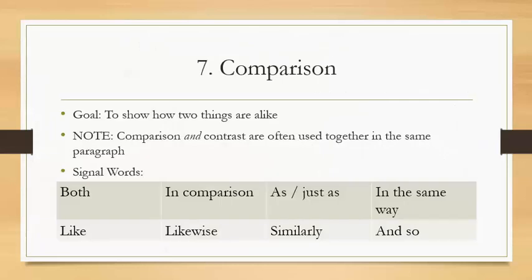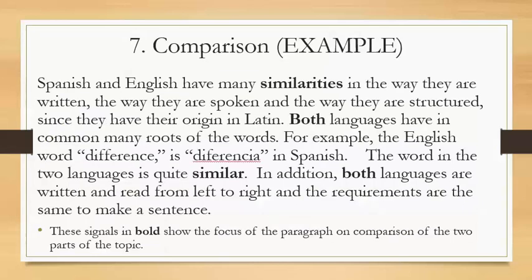Number seven: comparison. The goal is to show how two things are alike or similar — remember, synonyms are a comparison showing similarity. Comparison and contrast are often used together in the same paragraph, showing some similarities and some differences. Signal words for comparison are: both, in comparison, as or just as, in the same way, like, likewise, similarly, and so. The example paragraph here is all comparison — showing all similarities. Pause the video to read it and look at the key signal words in bold.